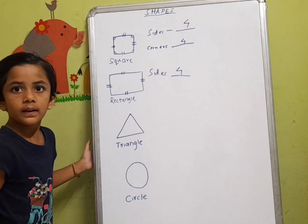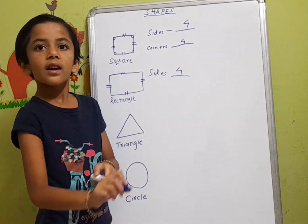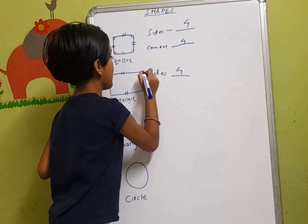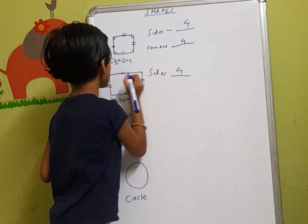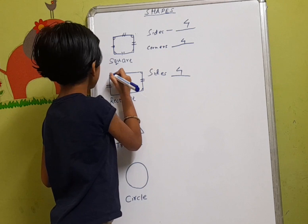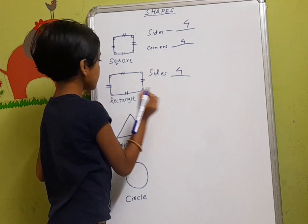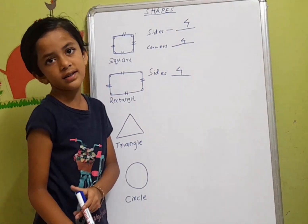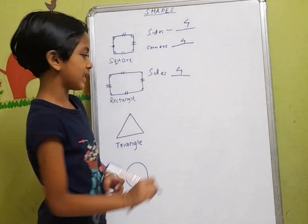Now let's count corners: one, two, three, four. There are four corners in a rectangle.